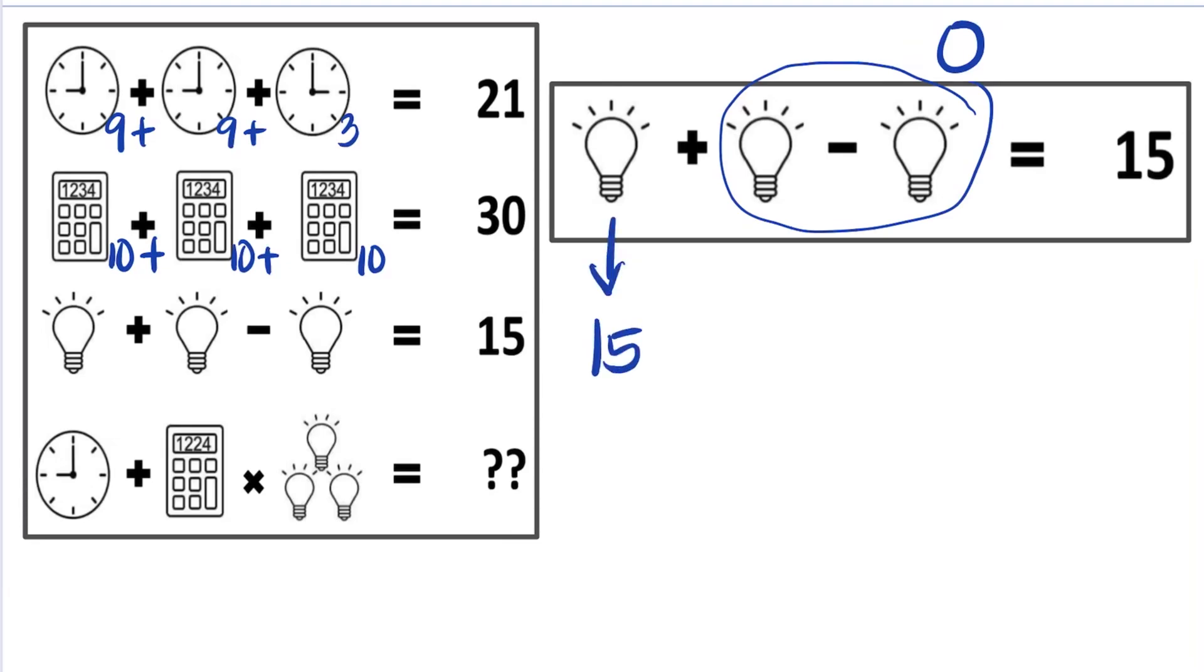So this means that the value of one bulb is equal to 15. And checking if 15 really works, we have 15 plus 15 is 30, minus 15 is equal to 15. So indeed, the value of each bulb is equal to 15.